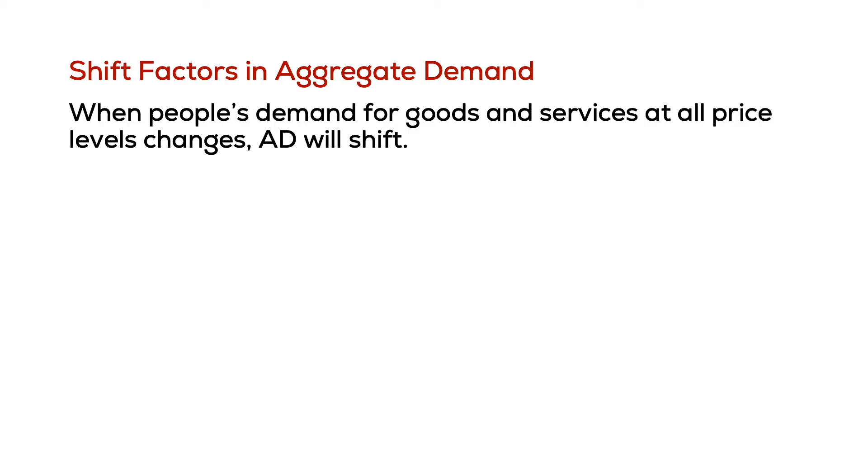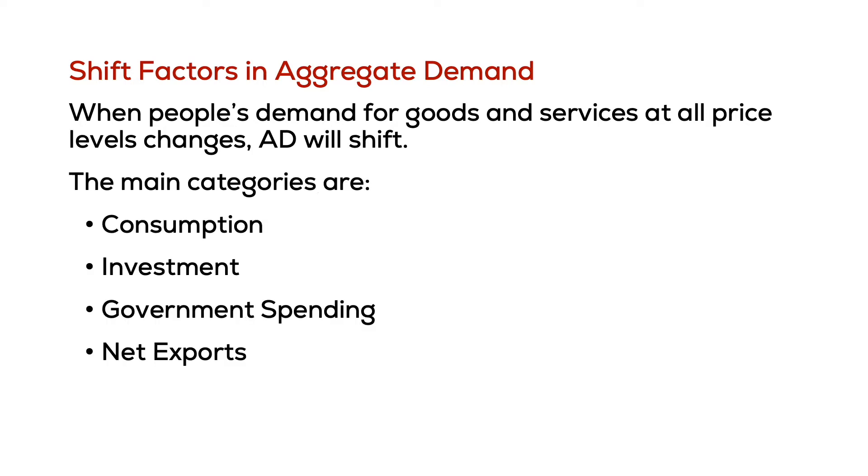In the next part of the aggregate supply-aggregate demand model, we're going to talk about shift factors in aggregate demand. We're going to assume that prices remain constant, but there's some outside factor that changes our spending habits. We're going to look at consumption, business investment, government spending, and net exports, and ask what might change the behavior of these components that is not price-level related.